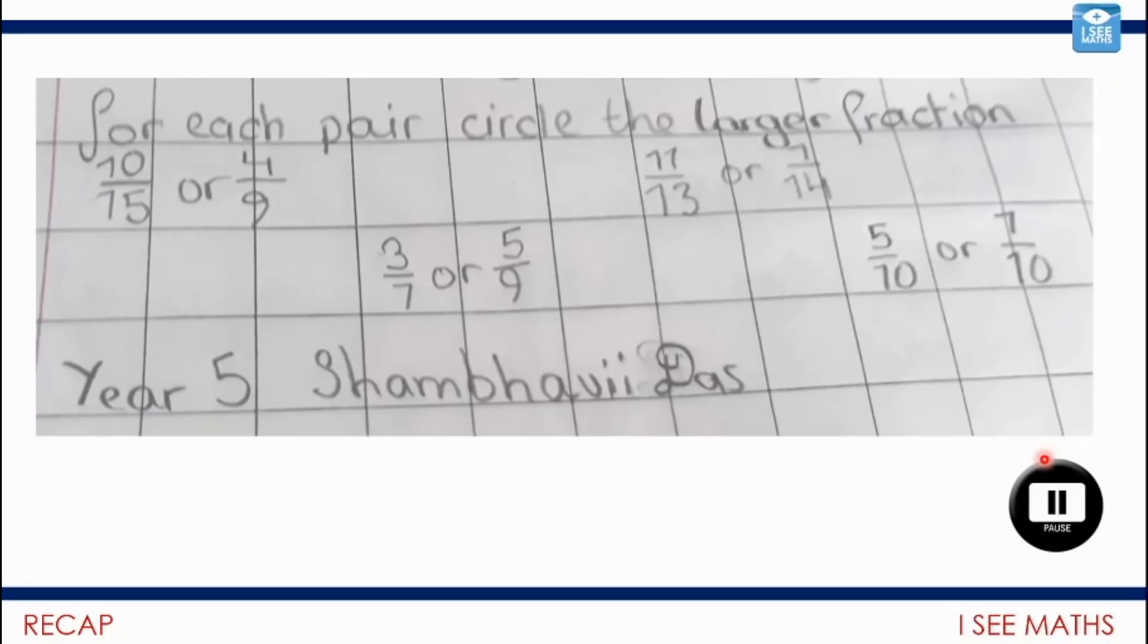So this is from Shambhavi. I hope I've pronounced your name correctly there. So for each pair, circle the larger fraction, and have a think about which strategy of those could you rely on here. So pause the video and have a think about those ones. OK, and let's have a look. So here we've got 5 10ths and 7 10ths. Actually, we can just compare there. We've got the same denominator, so we can just compare the numerator, the 7ths. Now, in the other examples there, this benchmark of a half is really useful. You see here, 7 14ths is a half, so 11 13ths is more than half, so that must be more. 3 7ths less than half, 5 9ths more than half, 5 9ths is more. 10 15ths is more than half, 4 9ths is less than half. Love that for really building on that strategy.